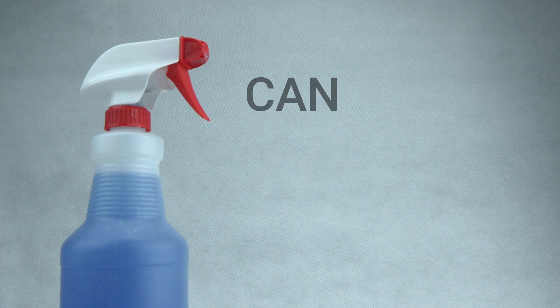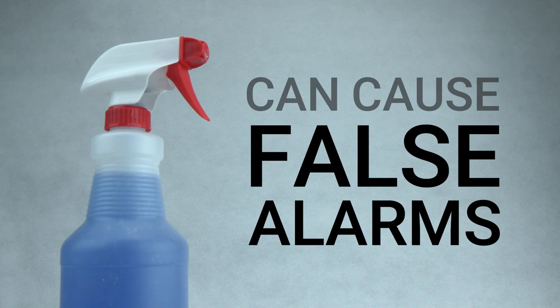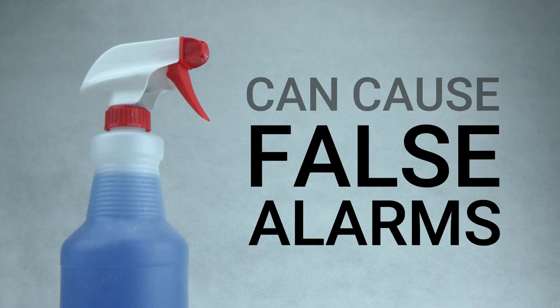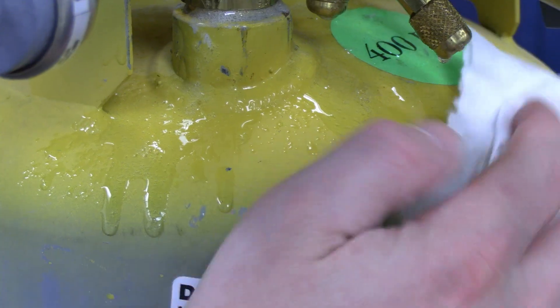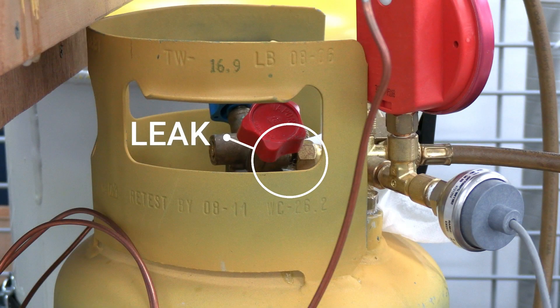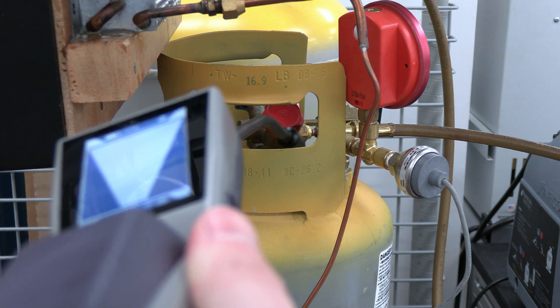Some electronic leak detectors will leave an alarm to various soap bubble ingredients. Spraying every pipe and fitting with soap solution can be time-consuming and messy. An electronic leak detector allows you to leak check much faster without the mess.